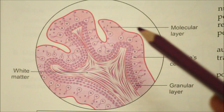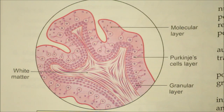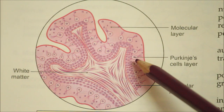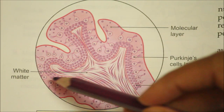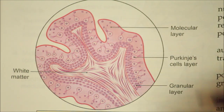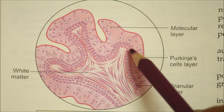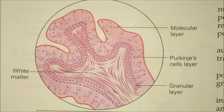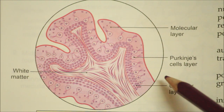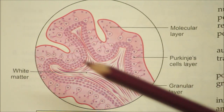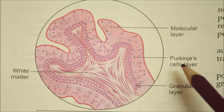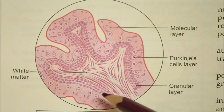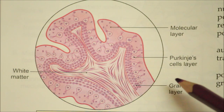Now let's look at the histological structure of the cerebellum. The gray matter consists of basket cells which inhibit the body of the Purkinje cells. The cortex contains three layers: first, the molecular layer; then the intermediate layer; and finally the inner layer.